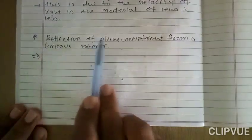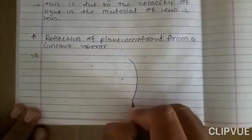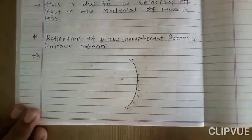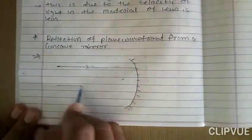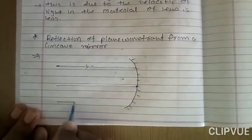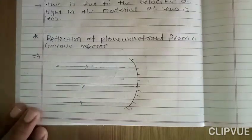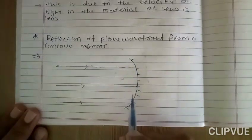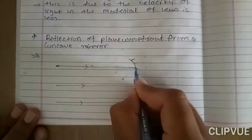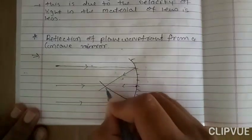Now, reflection of a plane wavefront from a concave mirror. This is the concave mirror. The rays are from infinite distance. After reflection, the rays meet at the focus F. After reflection, the rays meet at point F.